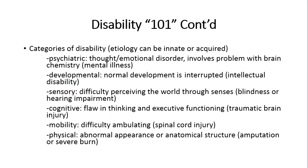The second category is developmental disabilities — interruptions in normal development. These can manifest as intellectual disability, autism spectrum disorder, or neurological disability, and usually result from something that happens during gestation or the birthing process. There are also sensory disabilities, which involve difficulty perceiving the world through senses — vision and hearing — including partial or complete blindness or hearing impairment.